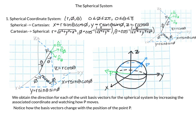Next, consider e_phi — phi is the angle between x and the projection of P onto the x-y plane. As phi increases it goes from 0 around to 2π, so e_phi is tangent to the circle of constant radius in the x-y plane, and therefore perpendicular to e_r.